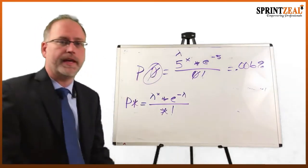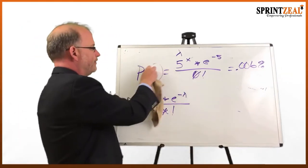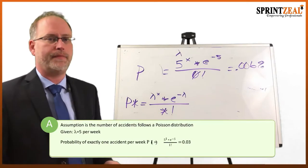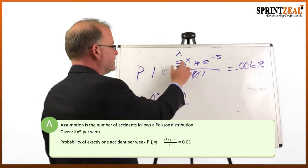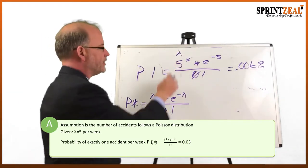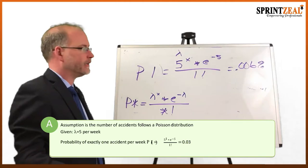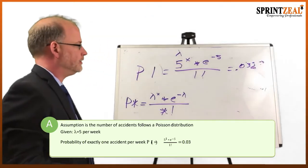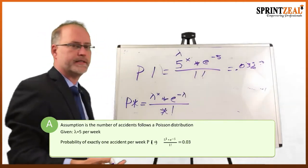Now we continue to do the exact same thing. We just change out these numbers. Now the question is: what's the probability of exactly one accident happening per week? We do the same thing — we take the zero out and put a one there. The mean stays the same because our average is still 5. We switch out the one and do that calculation, and now it comes to 0.03%. So the probability of exactly one accident per week happening is 0.03%.